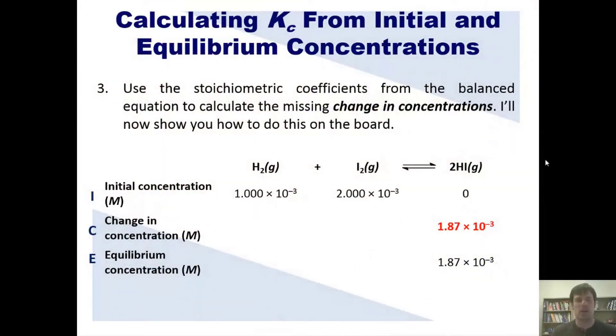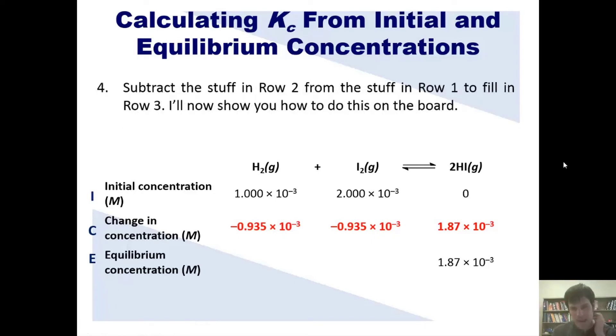So that is the answer to those two blanks. The change in concentrations for H2 and I2, then, are these numbers. Now, step four is, subtract the stuff in row two from the stuff in row one to fill in the missing places in row three. I'll now show you how to do that on the board.